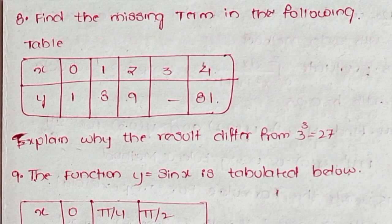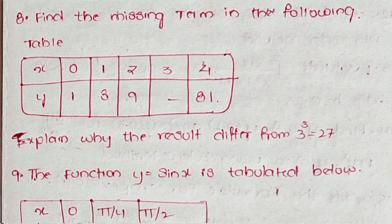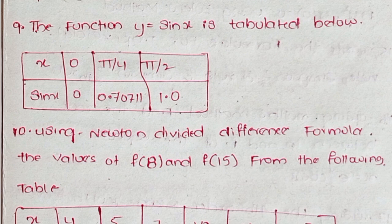Question 8: Find the missing term in the following table: x values 0, 1, 2, 3, 4; y values 1, 3, 9, blank, 81. Explain why the result differs from 3³ = 27. Question 9: The function y = sin(x) is tabulated below: x values 0, π/4, π/2; sin(x) values 0, 0.70711, 1.0.